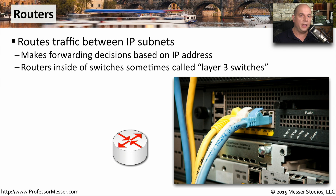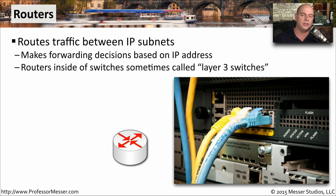If you are communicating from one IP subnet to another, then you will need a router. These routers make their forwarding decisions based on the IP address of the destination. There's usually a routing table within the device, and the router is able to look up and find exactly where that information should be going. If you have a switch that's not only switching but also routing, it's very common to hear this referred to as a layer 3 switch, referring to that OSI layer 3 functionality commonly associated with routers.